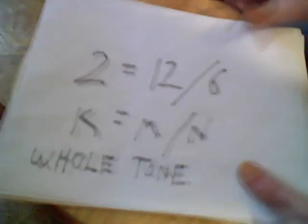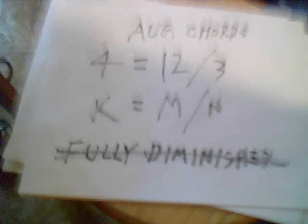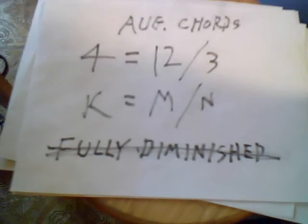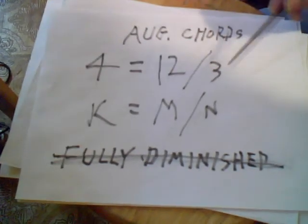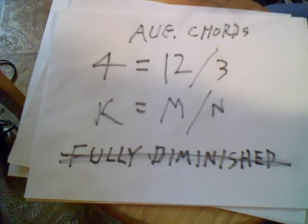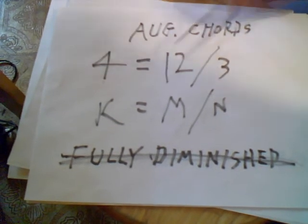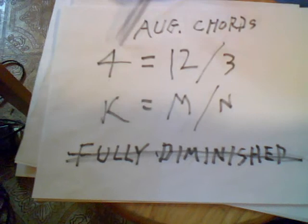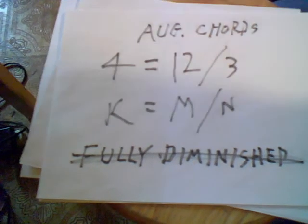Forget this fully diminished stuff, it's augmented chords. There's three of those. Three notes in the chord divided by the 12 modes. Three into twelve is going to give us four augmented chords, which is all there is. Again, absolutely true.